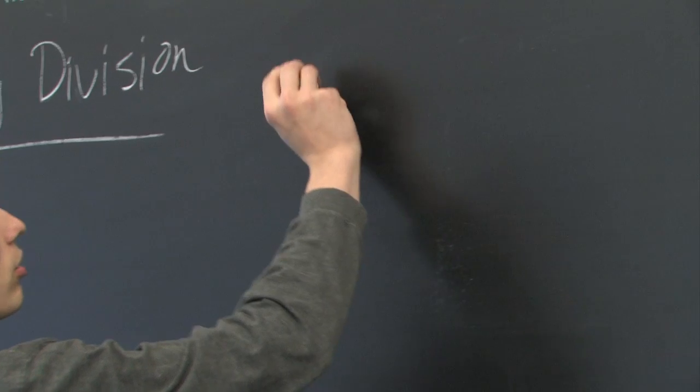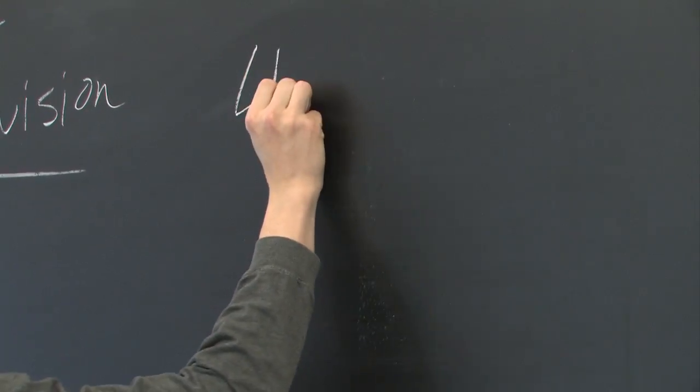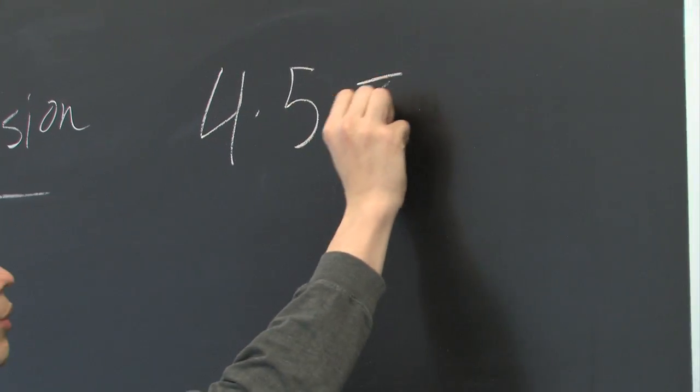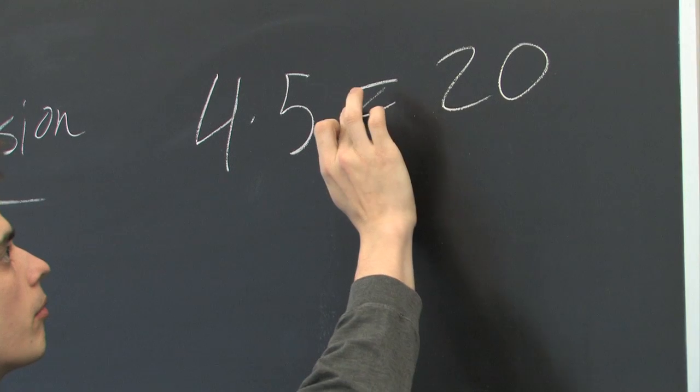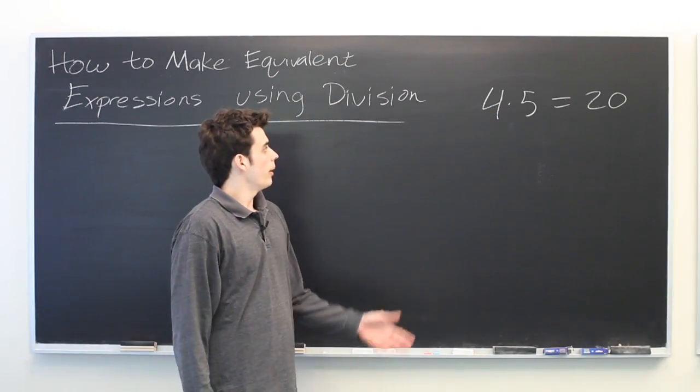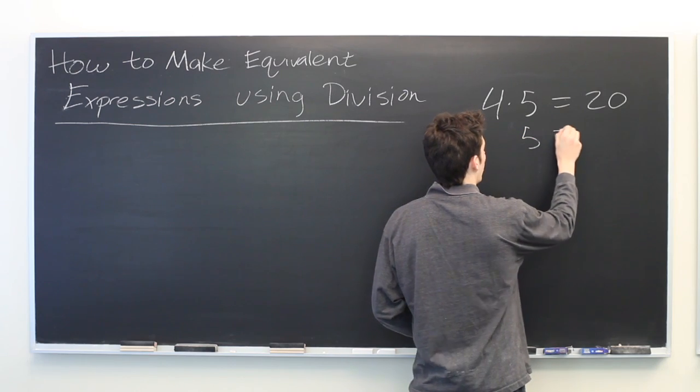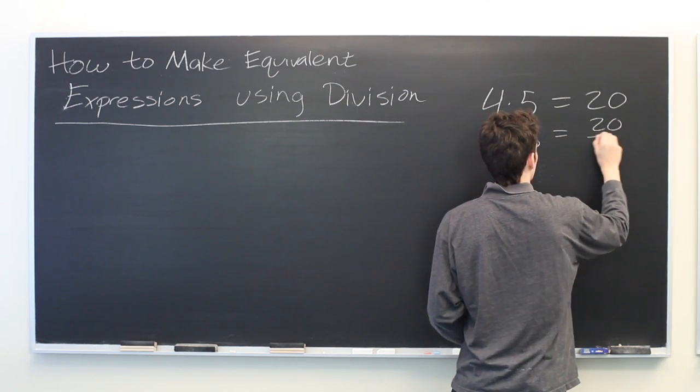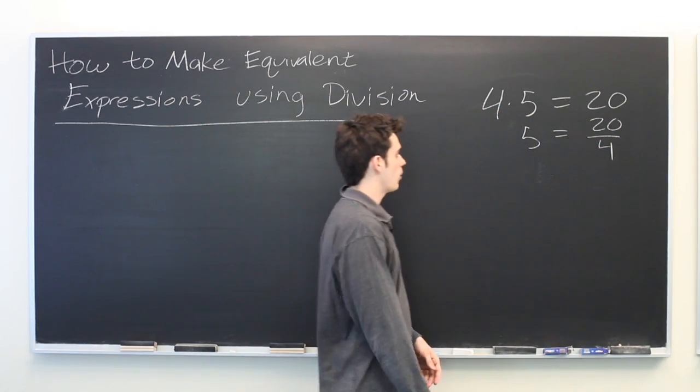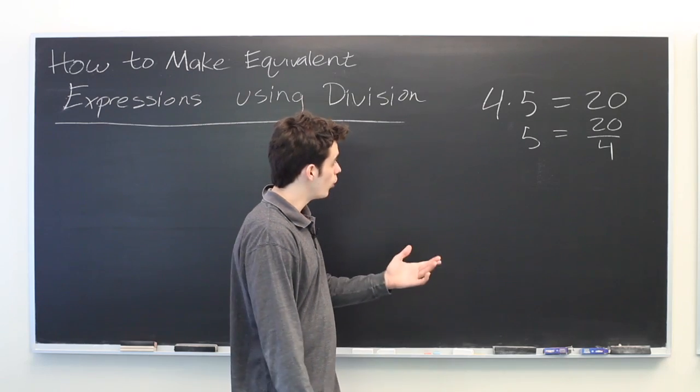So suppose you're given an expression such as 4 times 5 equals 20. Well, we can divide both sides of this equation by 4 and we get 5 equals 20 over 4 which is true.